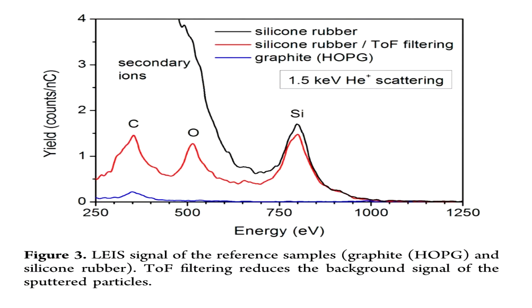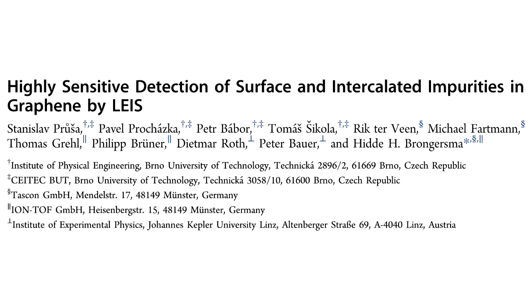By using short ion pulses, one can separate backscattered primary ions, for example helium, from sputtered ions of different masses by time gating. This makes it possible to detect signals that would otherwise be buried in the background that is caused by the ions sputtered from the sample surface.